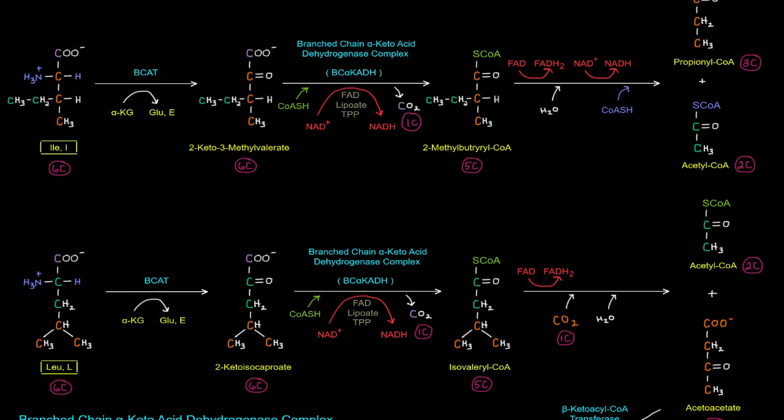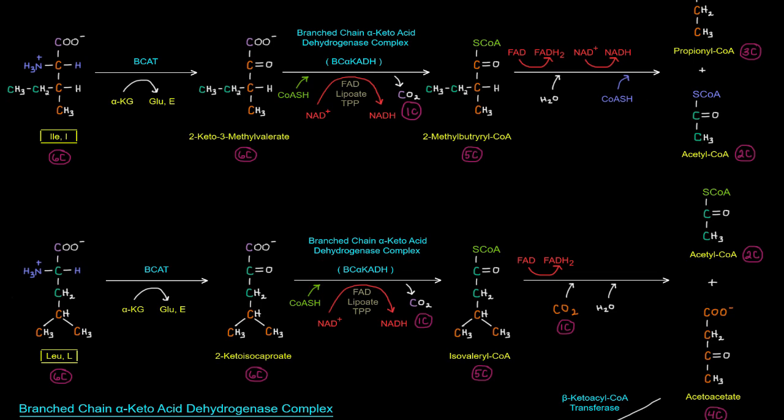And then we've got leucine here. Pretty much the same idea. BCAT acts on it. Aminotransferase reaction. Get that alpha-keto acid. The alpha-keto acid is 2-keto-isocaproate. And that will be acted upon by the dehydrogenase complex. Remove this carbon as a carbon dioxide. And we add the coenzyme A, get an NADH out of it. So we get isovaleryl-CoA, which is one carbon less than the 2-keto-isocaproate that we started with.